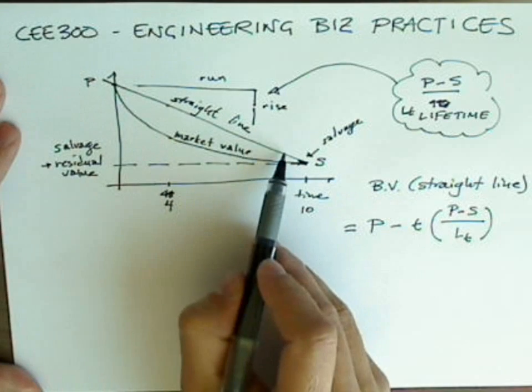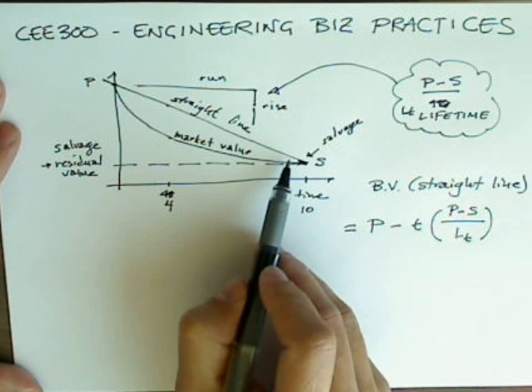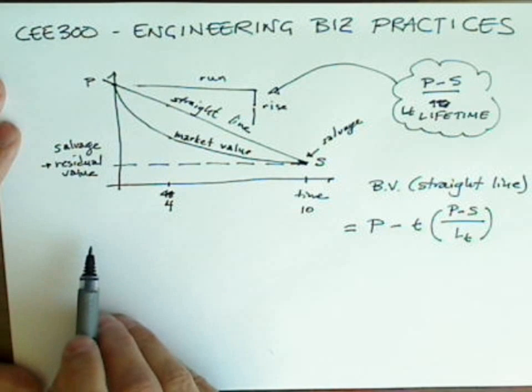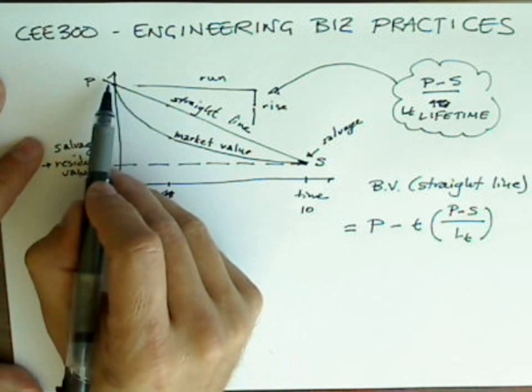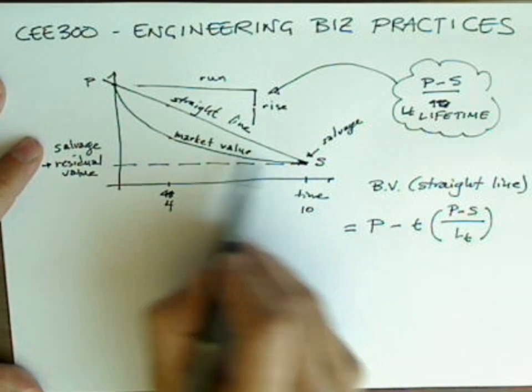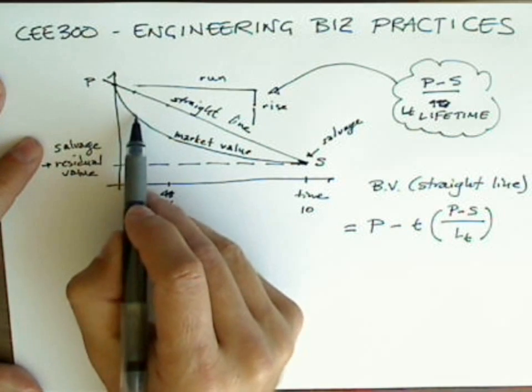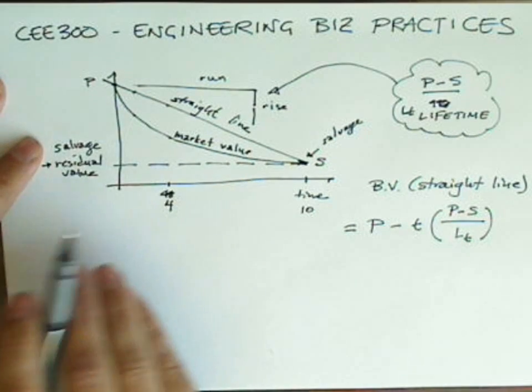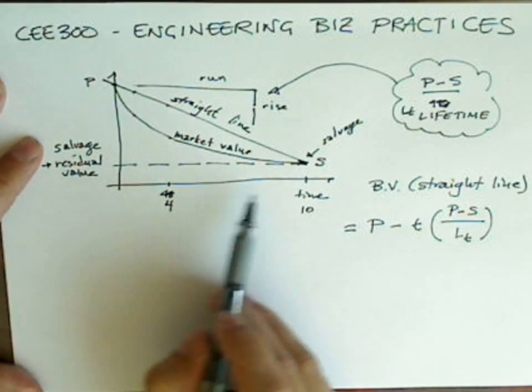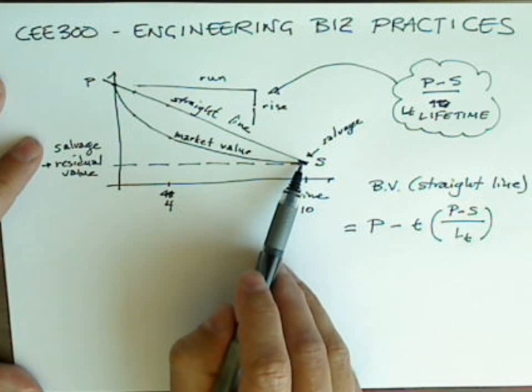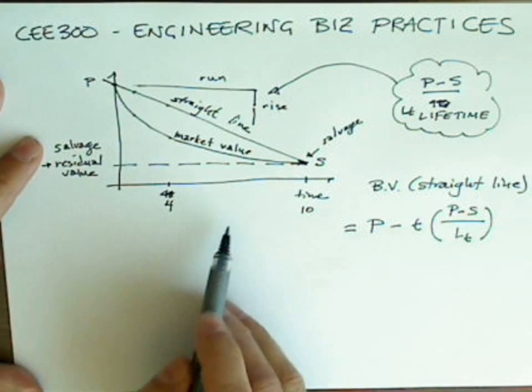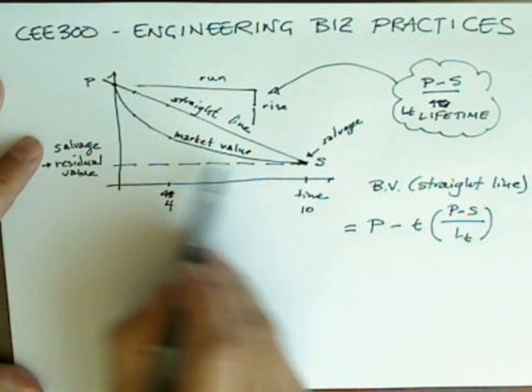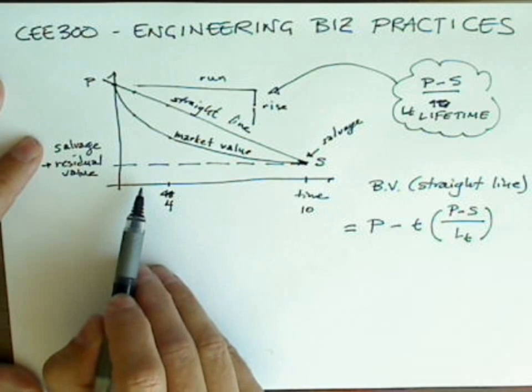But this is not a good approximation of market value. Because depreciation is an expense on which businesses do not have to pay taxes, if they straight line depreciate, they'll have less expense than the market value would justify. Less expense means paying more taxes. The cash flow diagram for depreciation to be a straight line would involve paying your taxes earlier than if you could increase your expenses in the early years, going with something closer to market value.